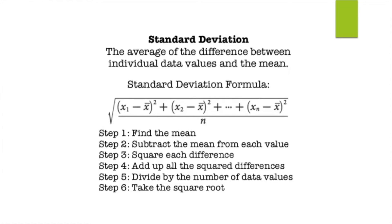Standard deviation tells you the difference between individual data values and the mean. Sometimes your average can be skewed — it can look like something it's not because of outliers or repeating numbers. We find standard deviation because it tells us, on average, how far each data point is from the mean, and that tells us how accurate our data is.